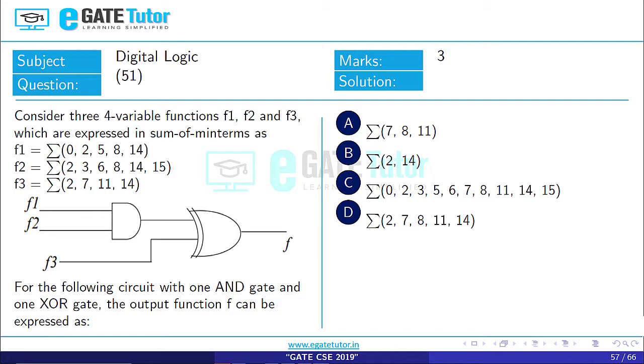For the following circuit with one AND gate and one XOR gate, the output function F can be expressed as: Let us find out the output of this AND gate first. F1 dot F2 is the result of the common terms between both functions F1 and F2. The result is 2 is common, 8 is common and 14 is common.